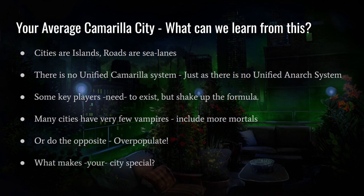You've also got to think about what makes your city special. Every By Night book is different — they don't just release a template. Berlin by Night is a horror example of how not to make your city special. But you have Montreal by Night, Mexico City by Night — a very different Sabbat city — Chicago by Night, New York by Night, and Cairo by Night, which is very interesting. Check out these books and learn from them. There's always something different about these cities.